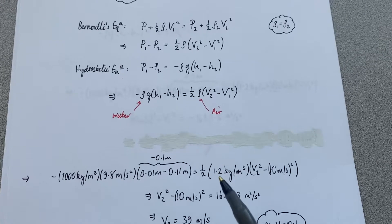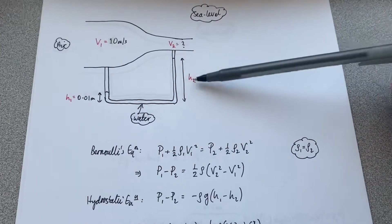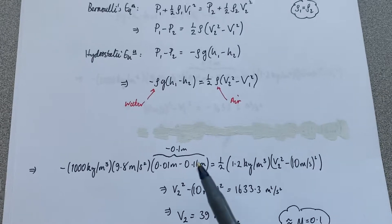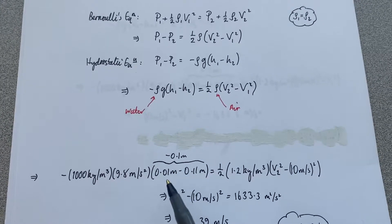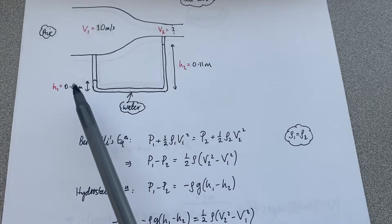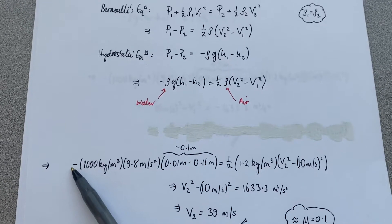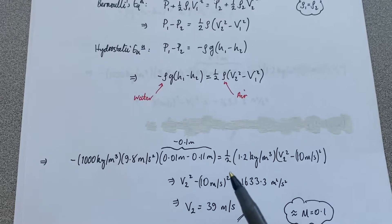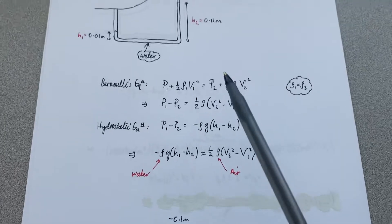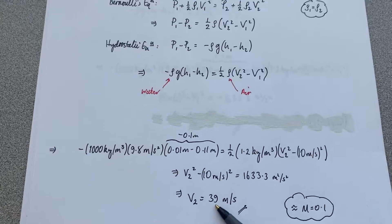So if I calculate that, obviously I've got v2 corresponding to h2 and v1 corresponding to h1. So on the left-hand side here, I have h1 subtract h2. h1 is smaller than h2, so I'm going to get a negative here, which will cancel with this negative over here. And therefore when I rearrange this equation for v2, I find that the flow speed in the test section has increased from 10 meters per second to 39 meters per second, which is approximately Mach 0.1.